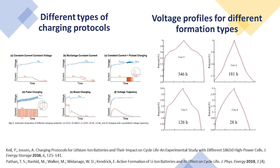These are a few common charging protocols used to cycle batteries: constant current constant voltage, step charge, and pulse charge. Here are some examples of formation cycling voltage profiles for NMC graphite cells. As you can see, the voltage profile and the time required is different in each case due to different combinations of charging protocols and current densities.